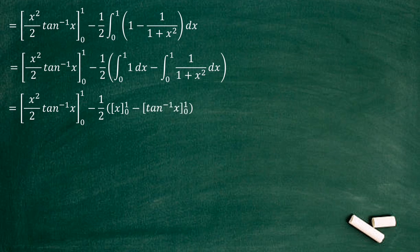Finally, we need to substitute upper limit and lower limit for these answers. First one x squared over 2 times tan inverse x, upper limit 1 minus lower limit 0.